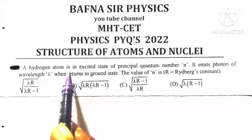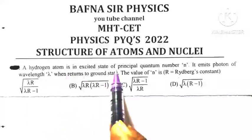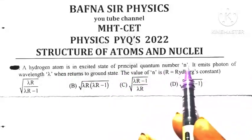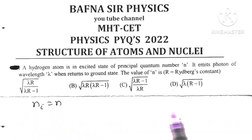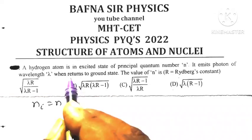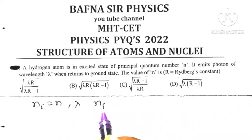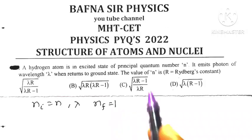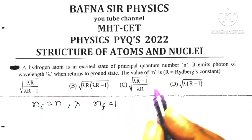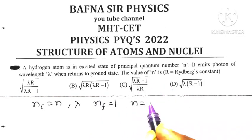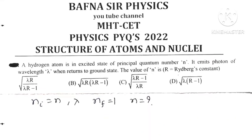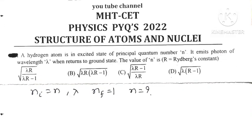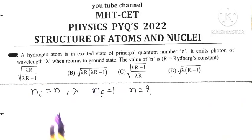A hydrogen atom is in an excited state of principal quantum number n, meaning ni is equal to n. It emits a photon of wavelength lambda when it returns to the ground state, meaning nf is equal to 1. We have to find the value of n.